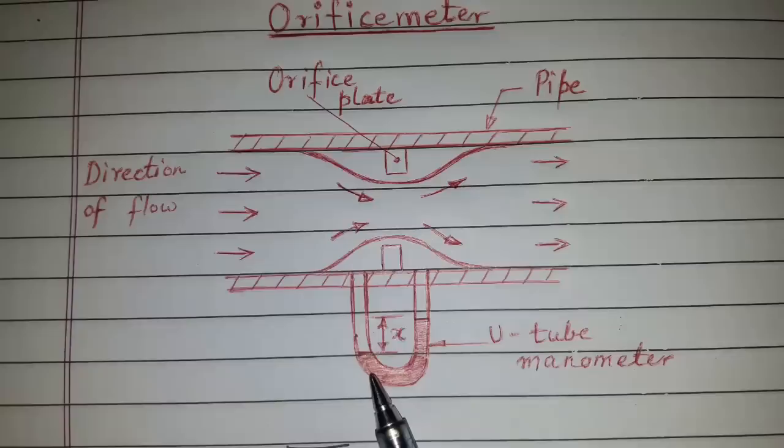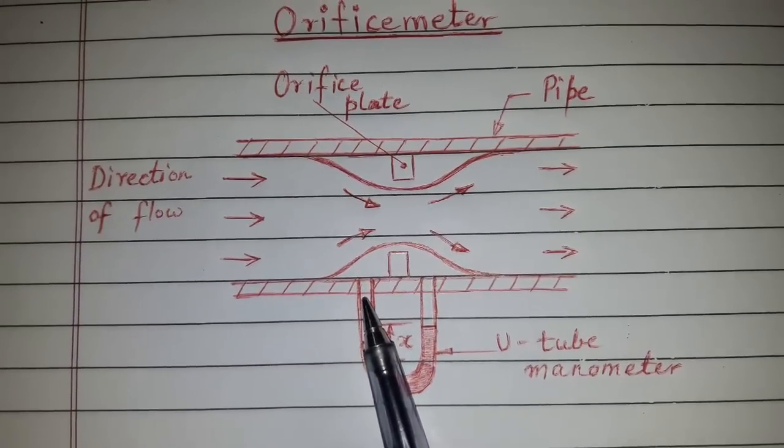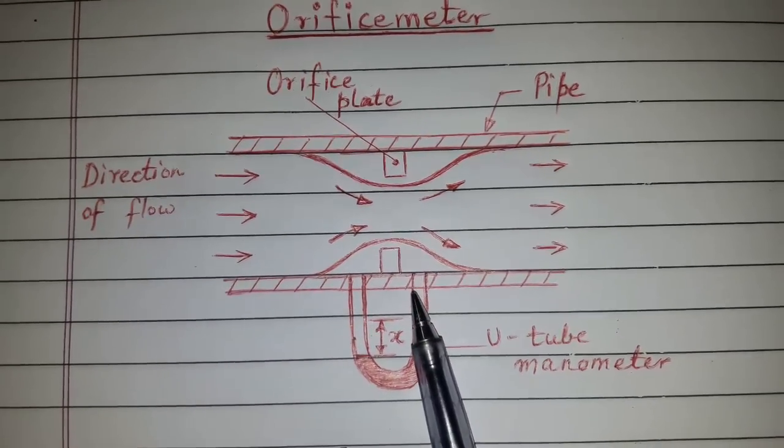A U-tube manometer is connected between two sections, one at the upstream and the other at the vena contracta.